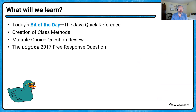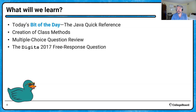We've got a lot to cover today. Today's bit of the day will be a look at the Java Quick Reference — the sheet you'll have access to on the AP exam. We're going to look at the creation of class methods, methods and control structures, multiple choice question review, and the Digits 2017 free response question. This week we're looking at questions from different years.